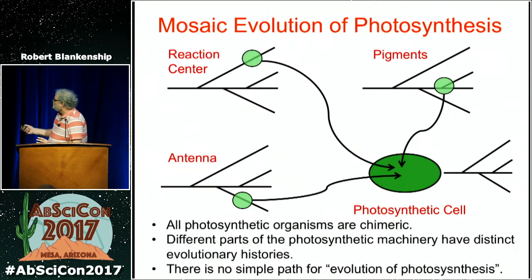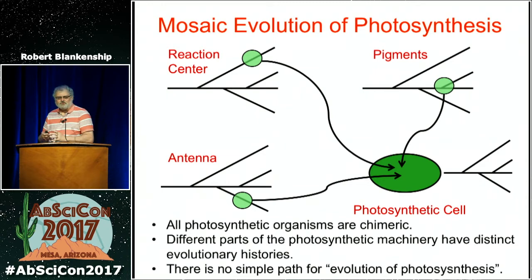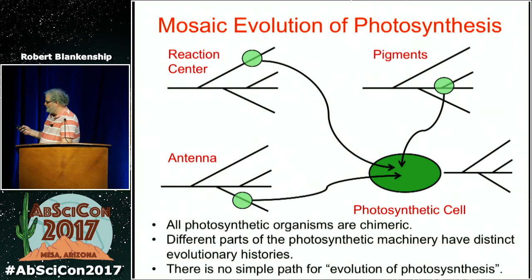To summarize mosaic evolution of photosynthesis: different parts of the photosynthetic apparatus may have had different evolutionary origins and been brought in through horizontal gene transfer at different times from different sources. There's no single branching tree for how photosynthesis evolved — I used to think that was the holy grail, but at some point it dawned on me that such a thing doesn't exist. You have to think of it in a much more nonlinear way.